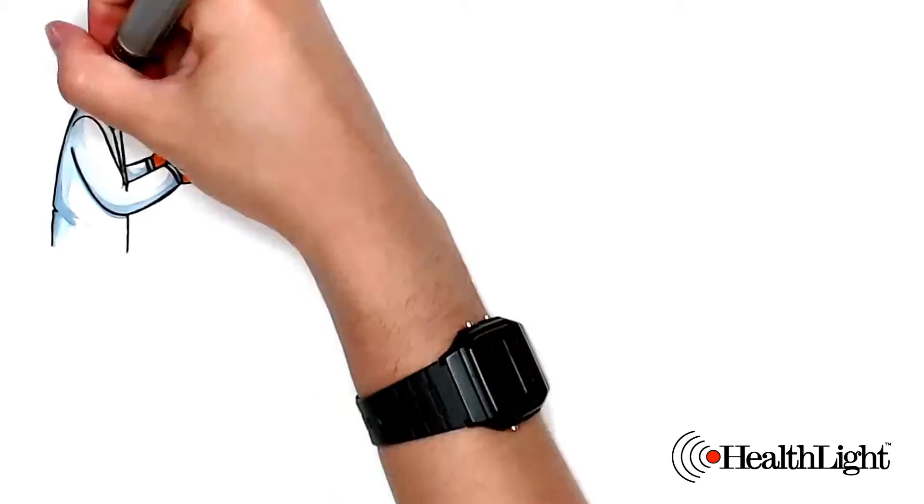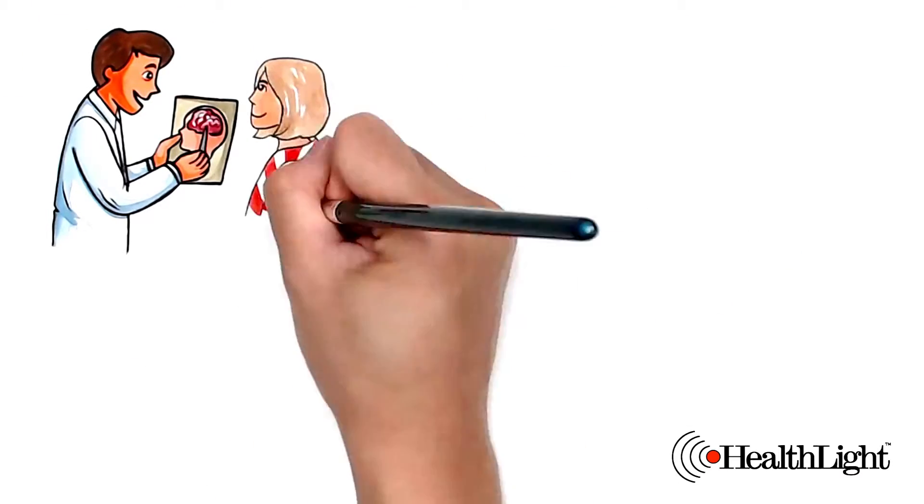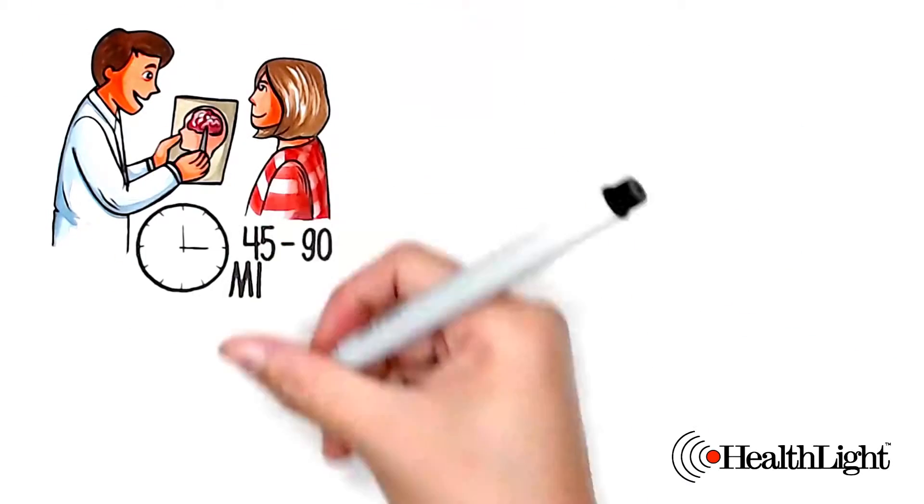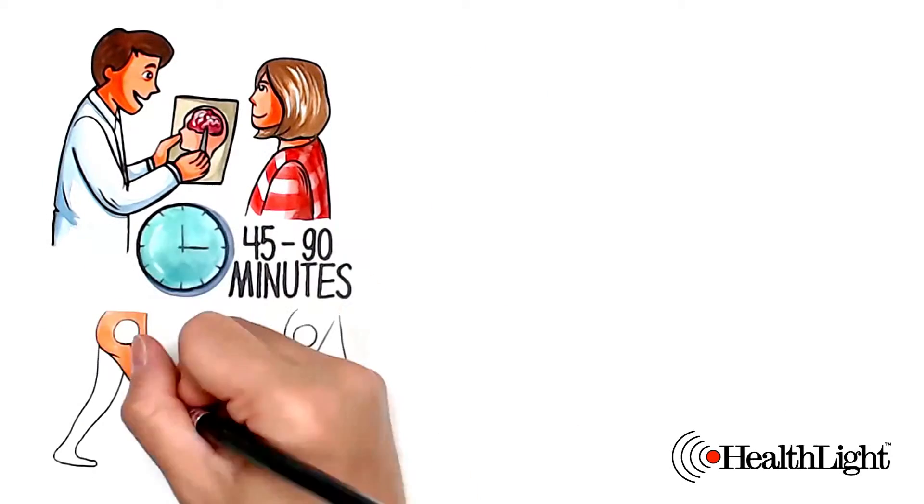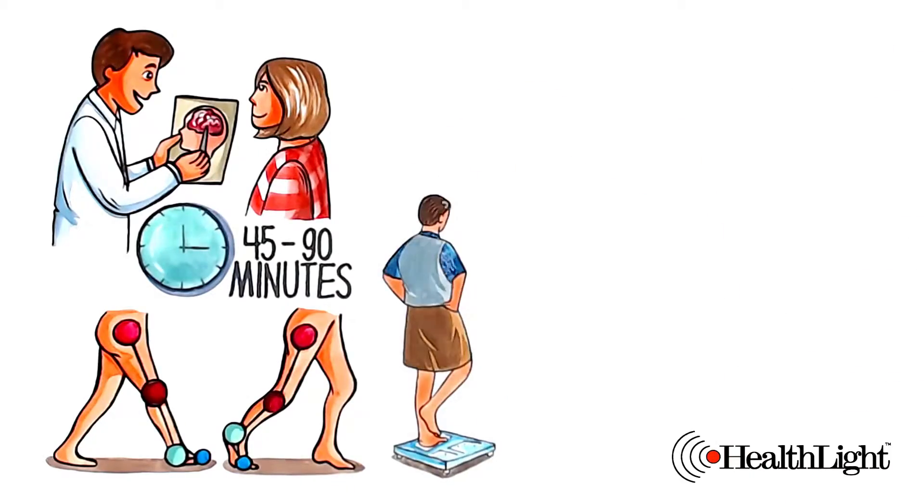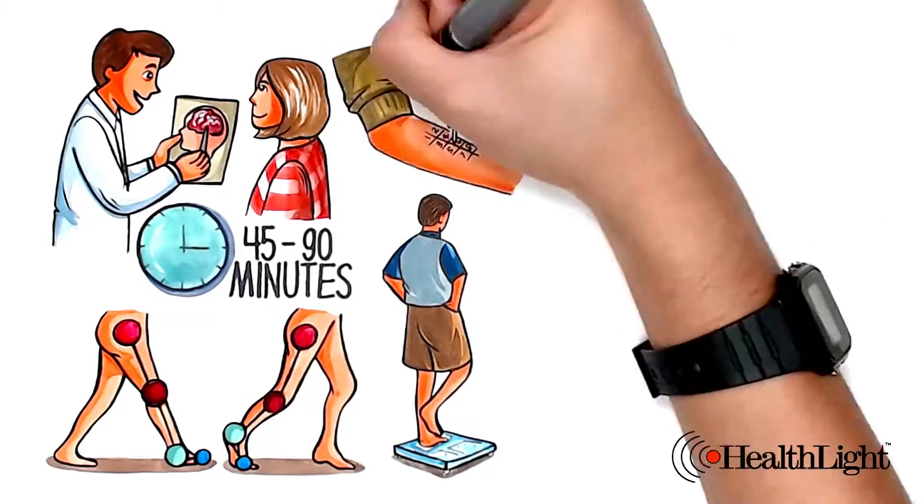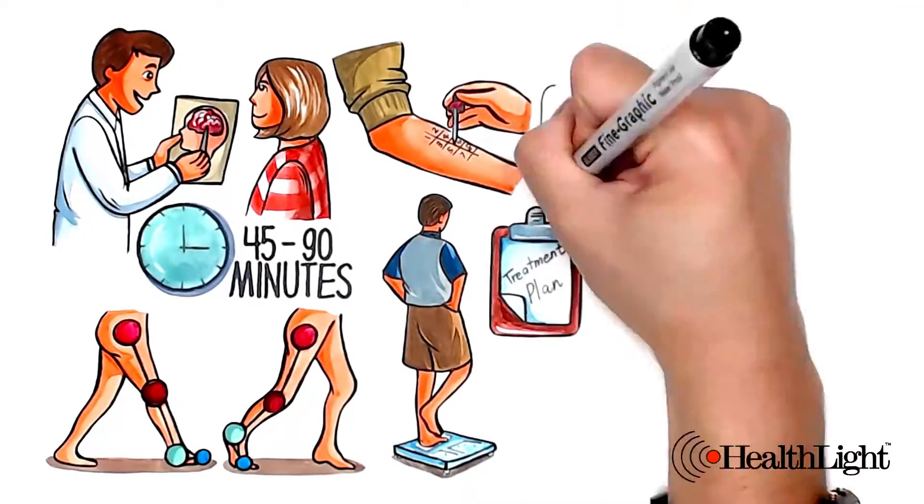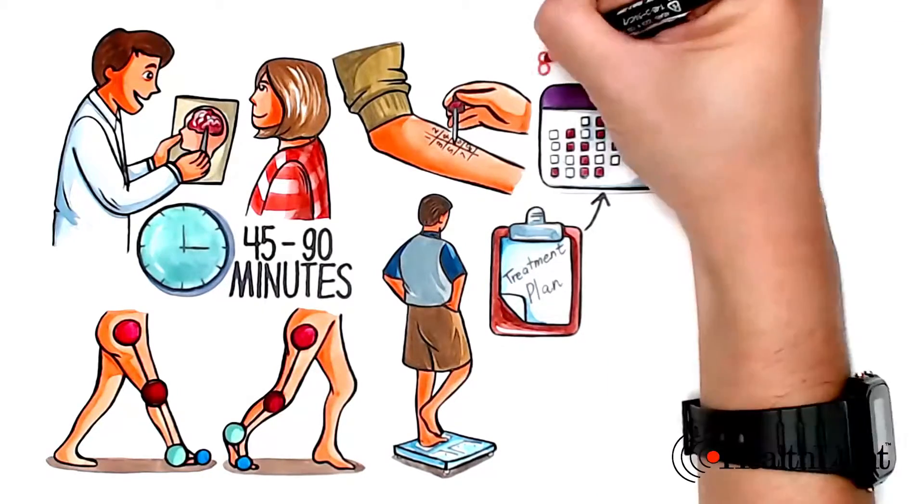Clinics usually offer a plan of care, including some or all of these: an initial 45 to 90-minute comprehensive neurological consultation and physical assessment, a gait and balance assessment, a sensitivity test, and a treatment care plan consisting of 3 visits per week for 8 to 12 weeks.